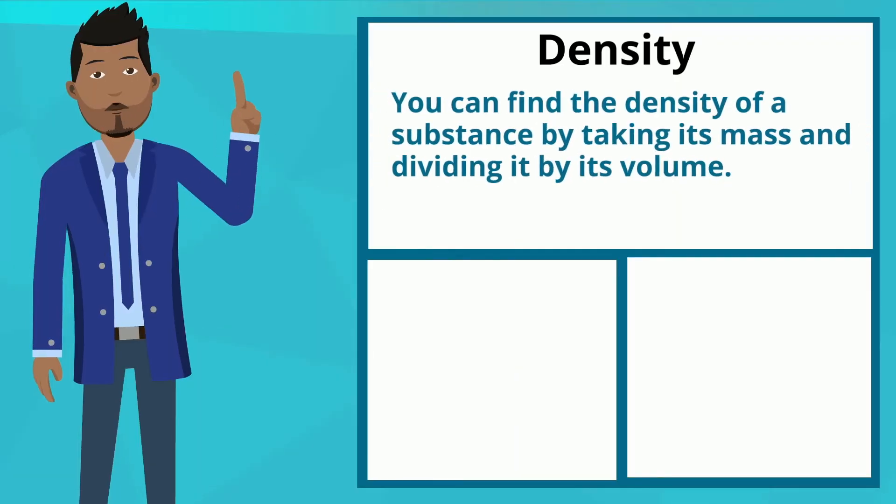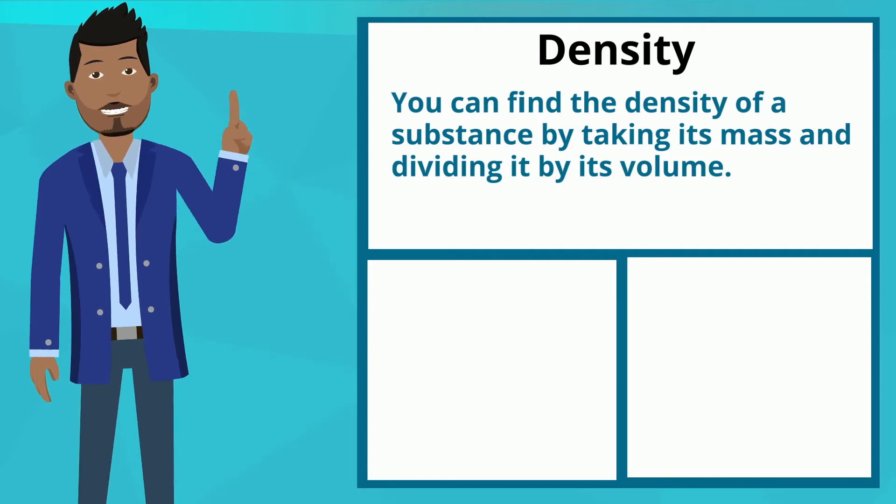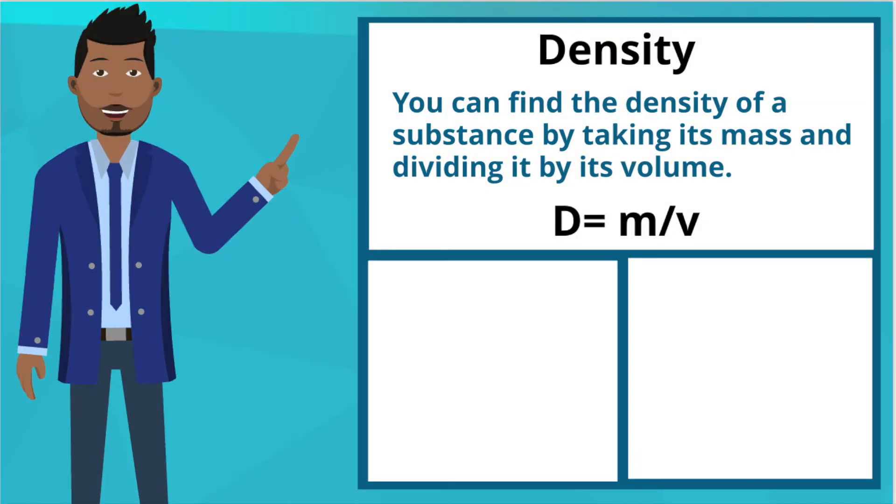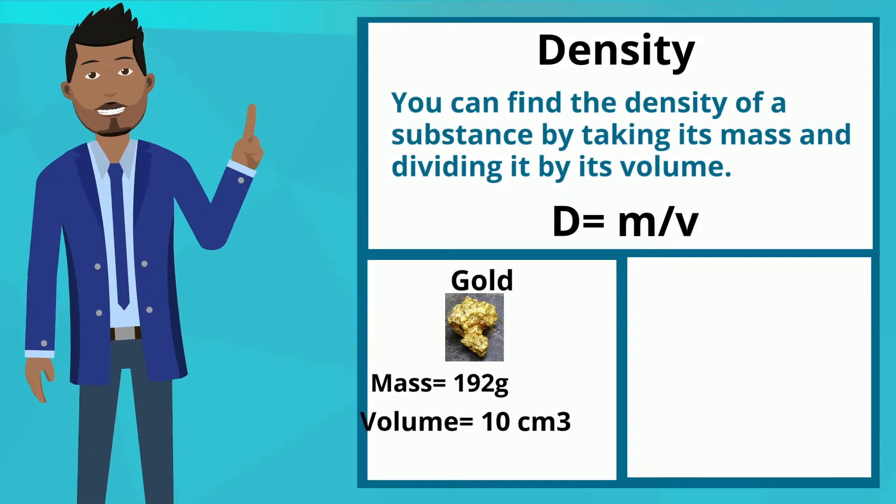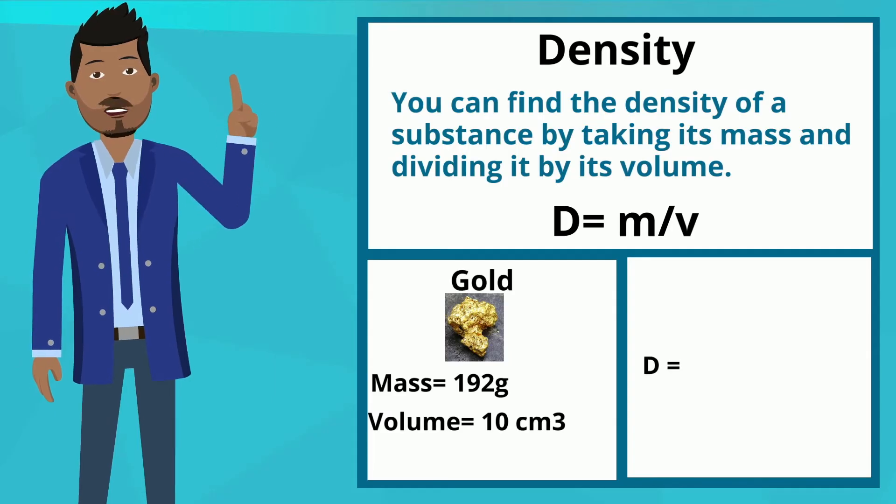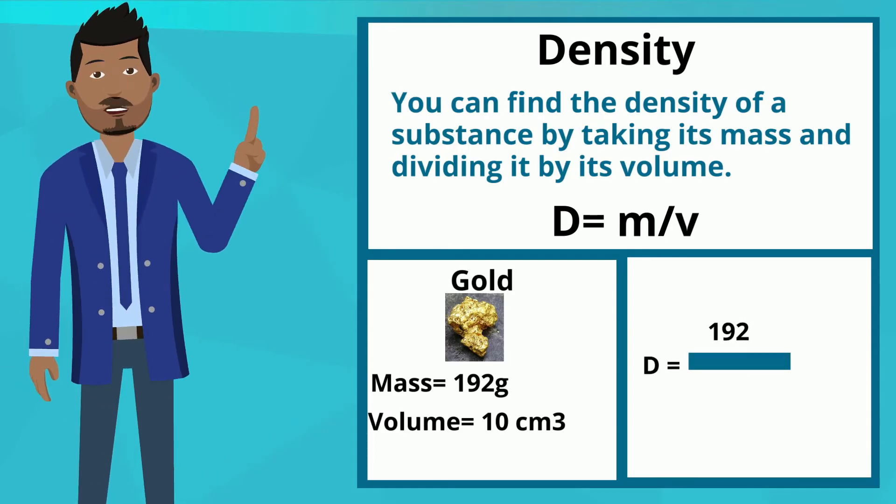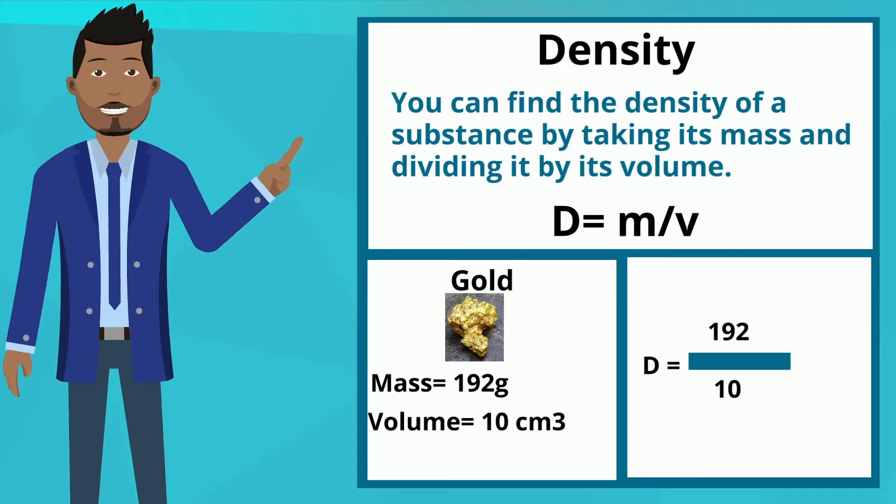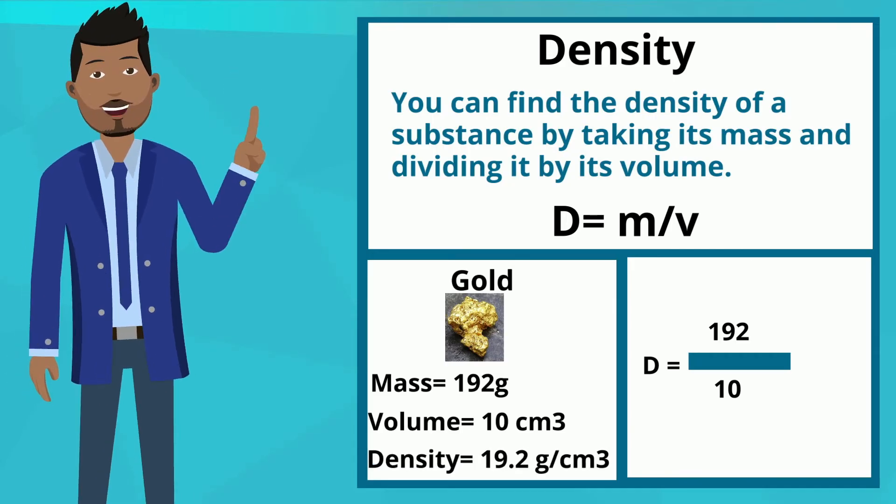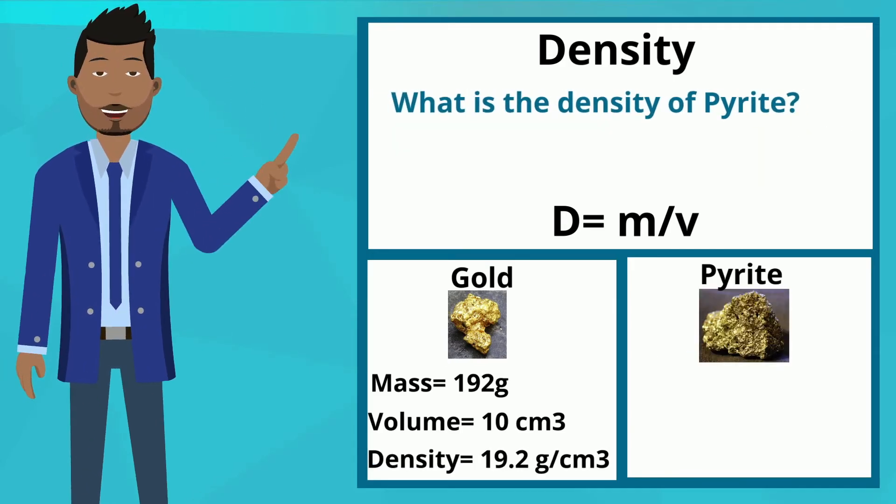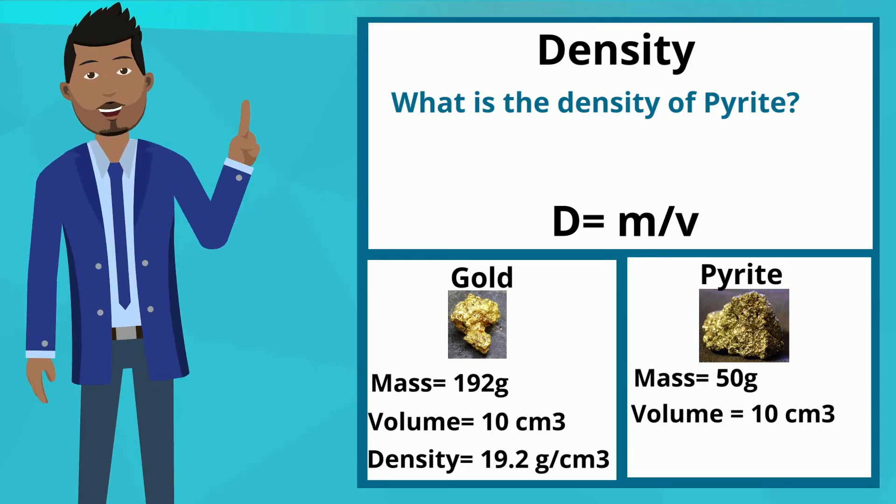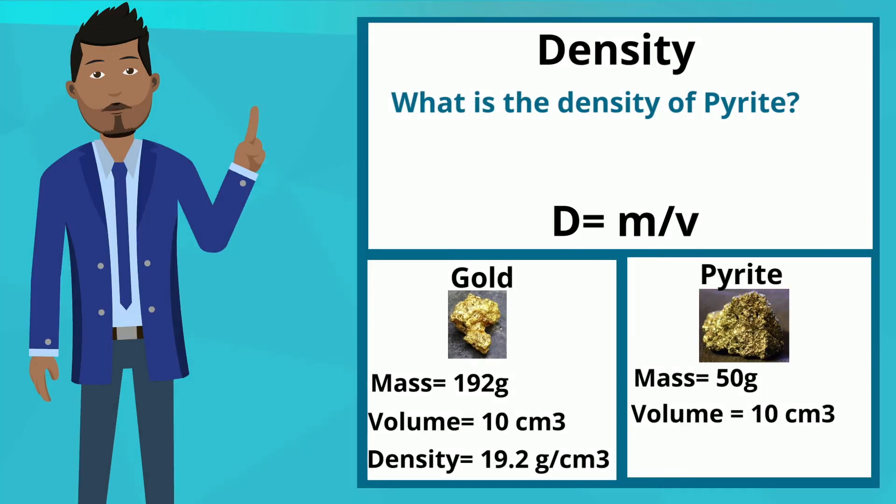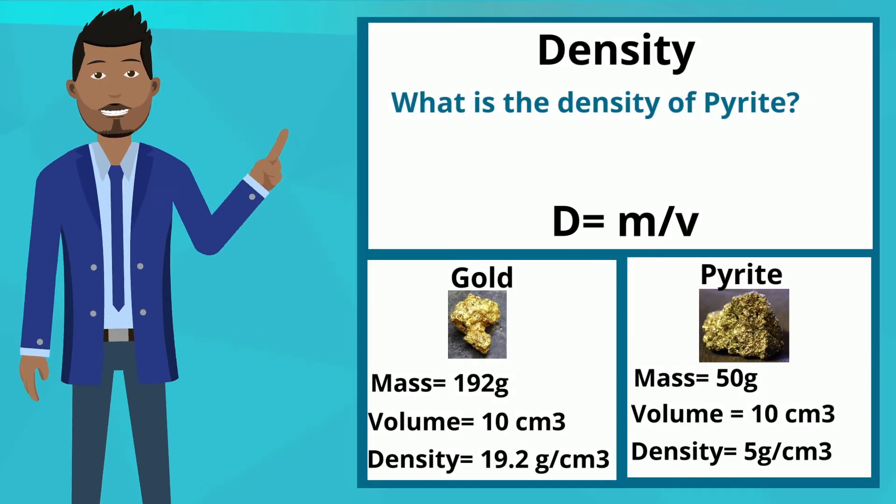You can find the density of a substance by taking its mass and dividing it by its volume, using the formula D equals M over V. Gold has a mass of 192 grams, a volume of 10 centimeters cubed. You take 192 divided by 10 and get a density of 19.2. What's the density of pyrite? Its mass is 50 and volume is 10. It would have a density of 5.